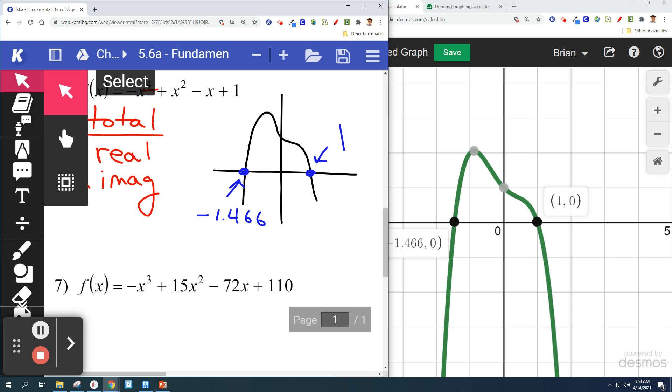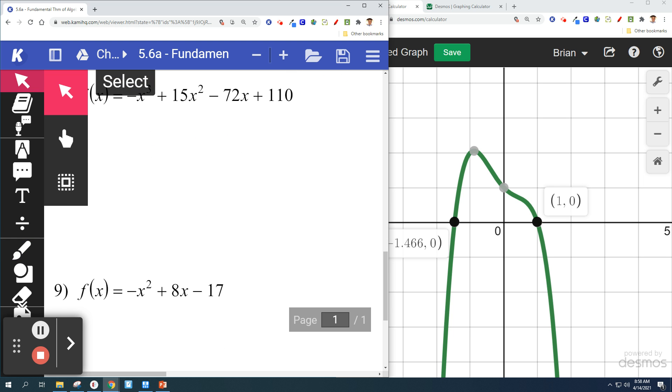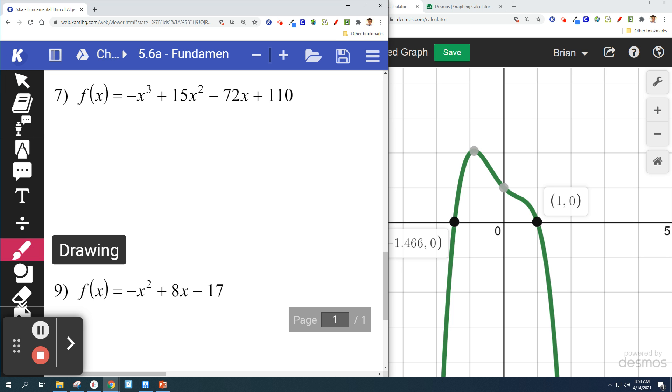Number seven. Same thing. Degree three. We can see that there are three total solutions. So we look for how many of them are real.